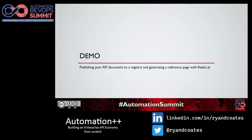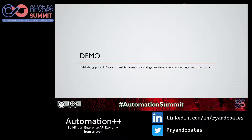Let's jump into our next demo, which is about publishing an API document like the one we just created into some kind of reference page. There are offline tools to do this via CLI; you can do this in your pipelines, create loose HTML files to throw up in an S3 bucket or blob storage, or build them into your own website. I'm going to use a tool called Redocly, which will help automate that process and keep it up to date through a GitHub plugin.